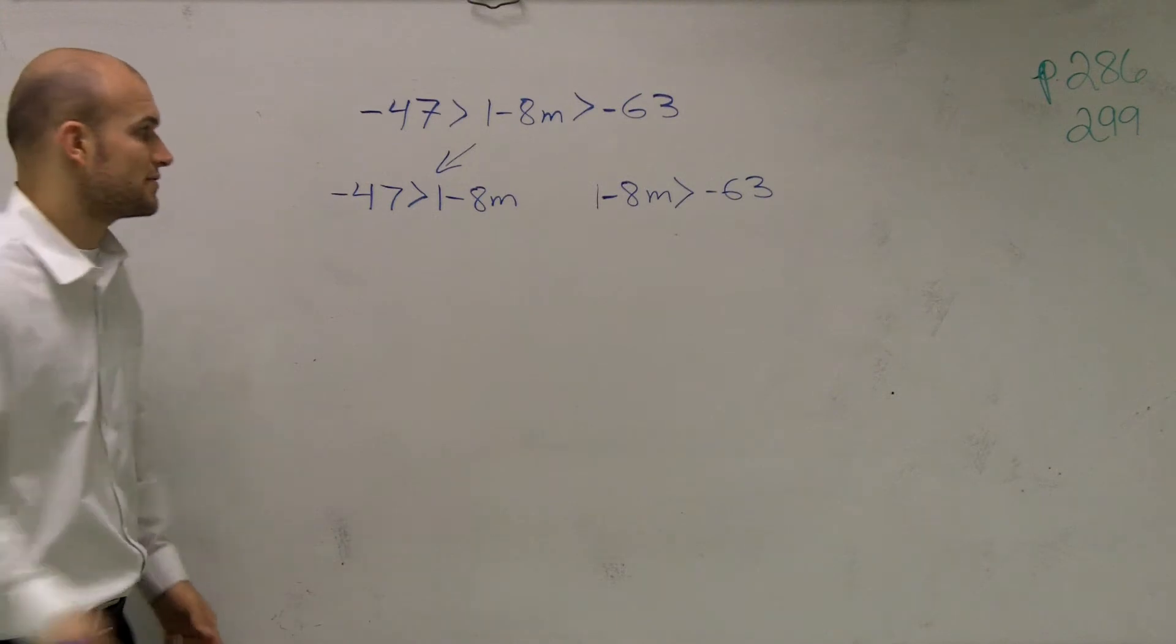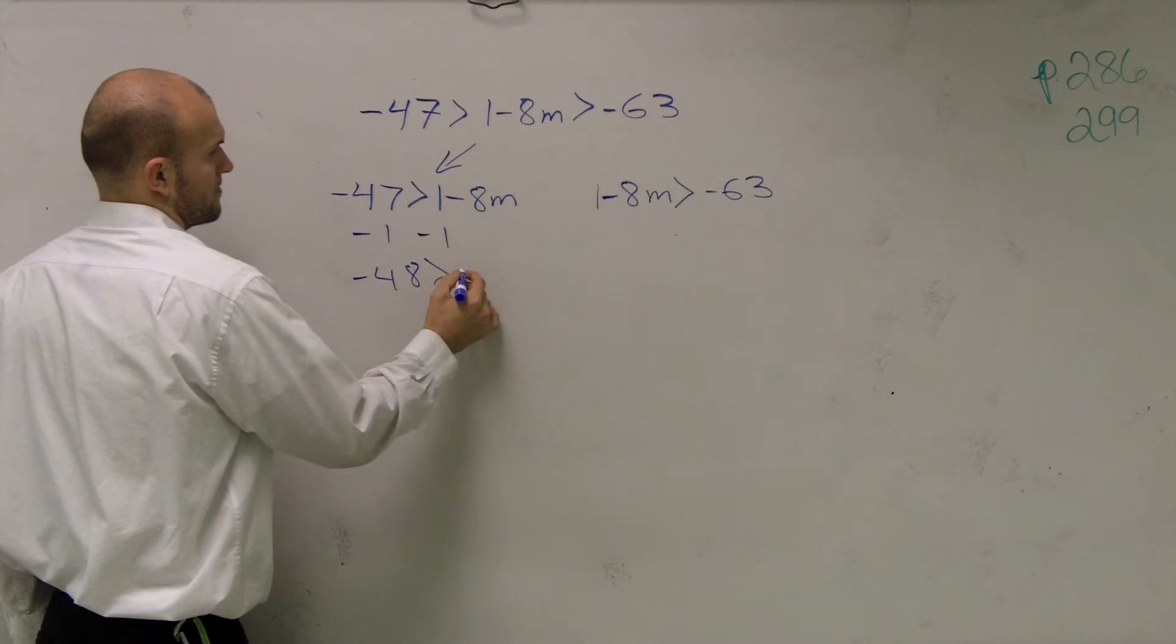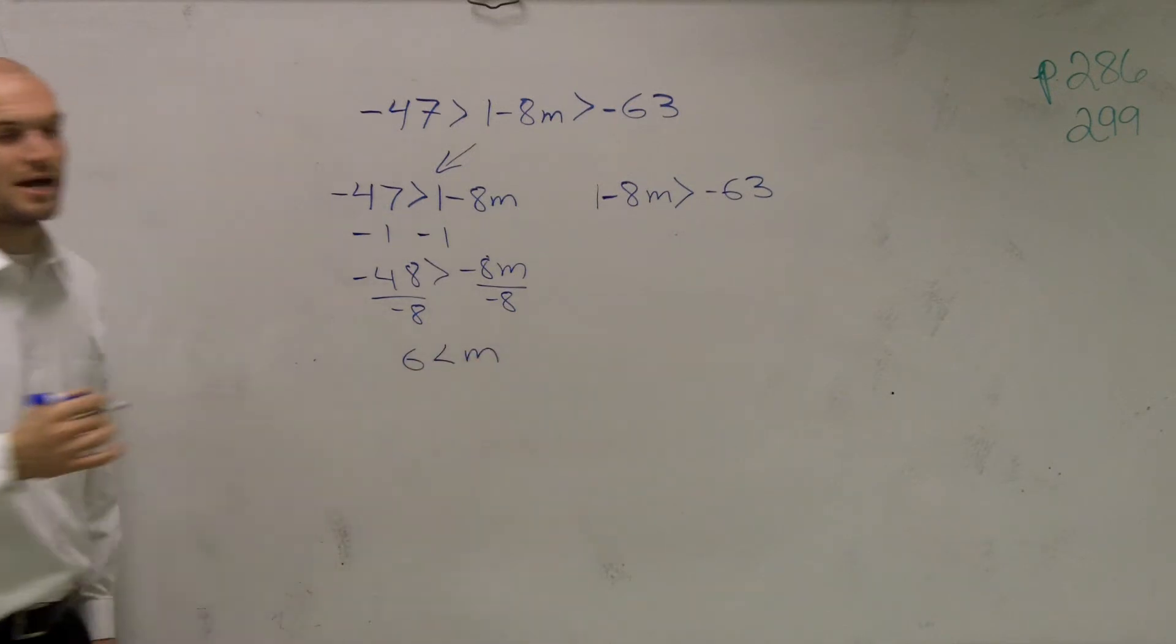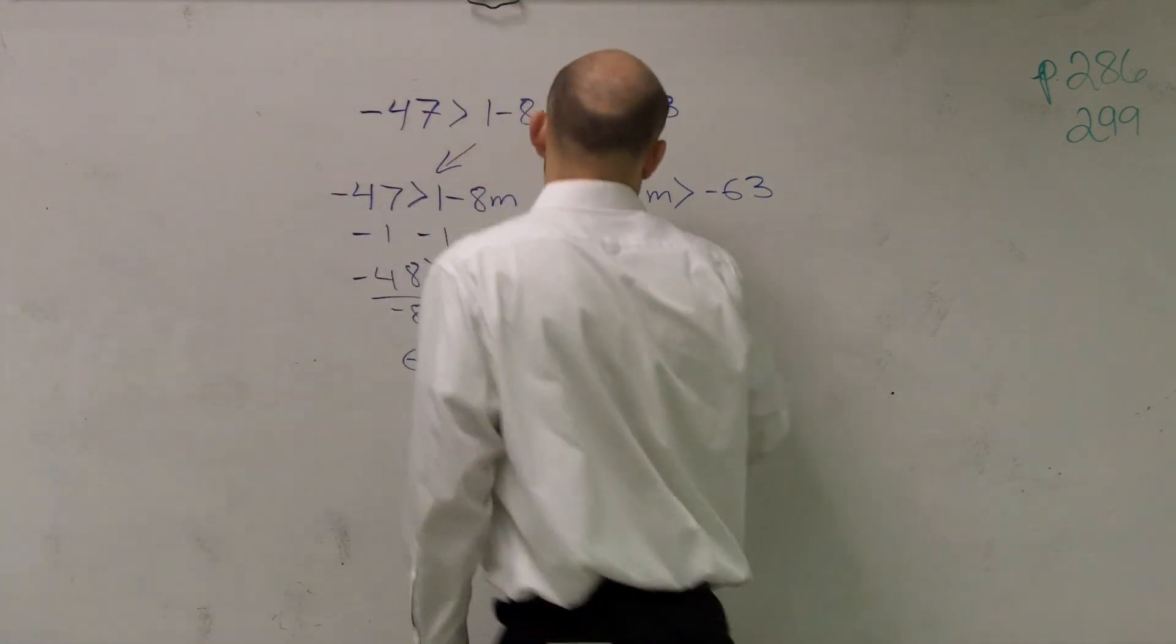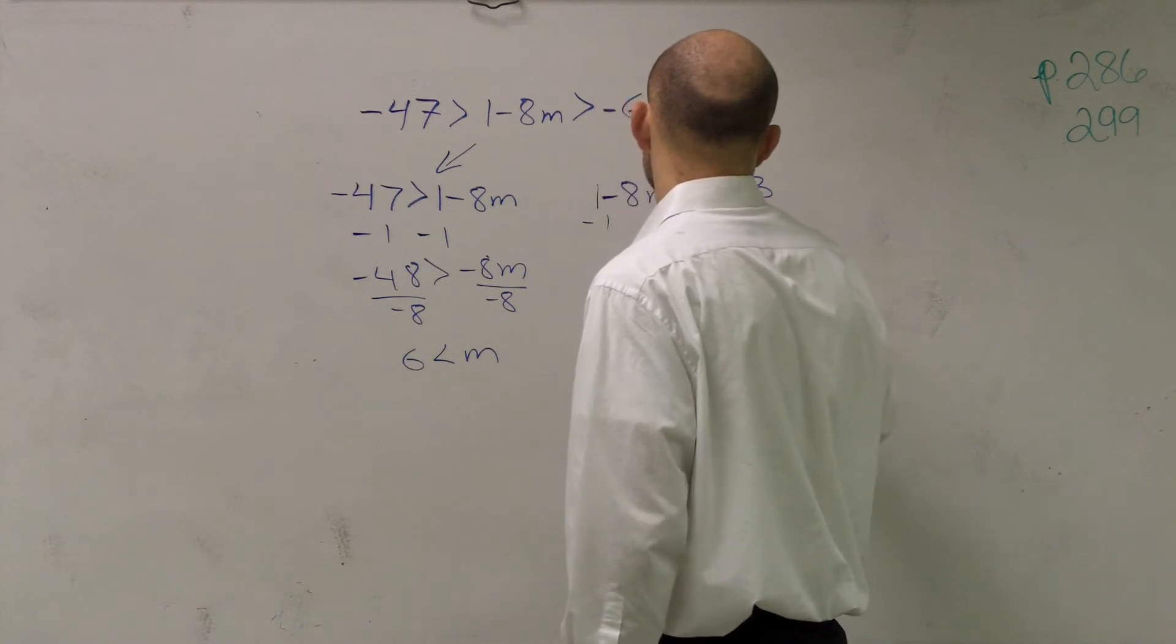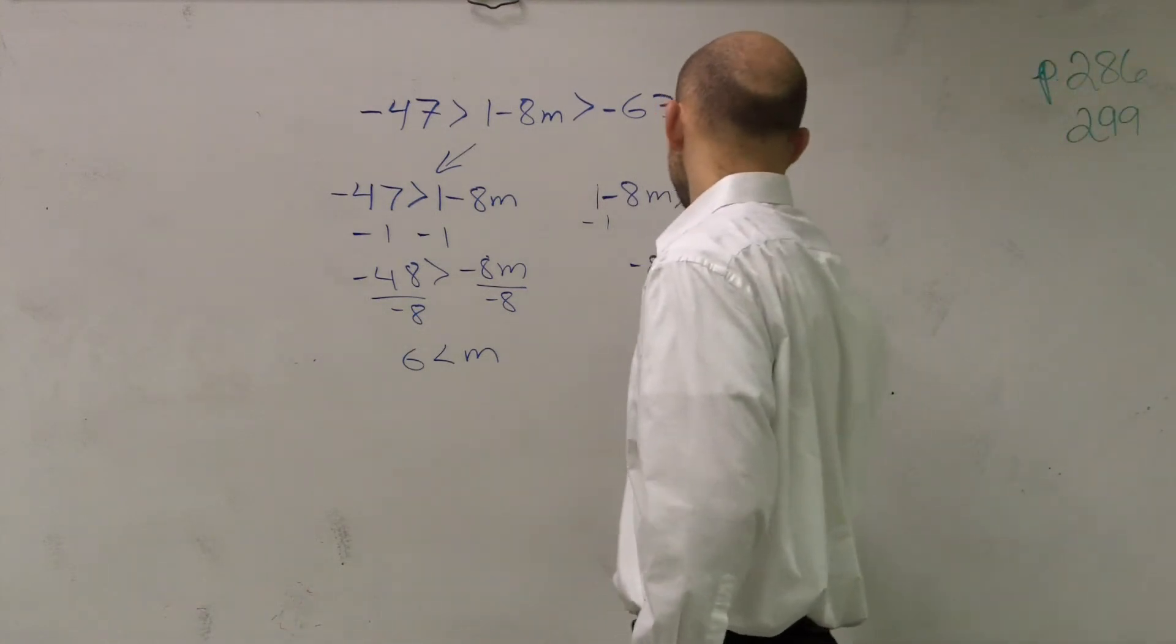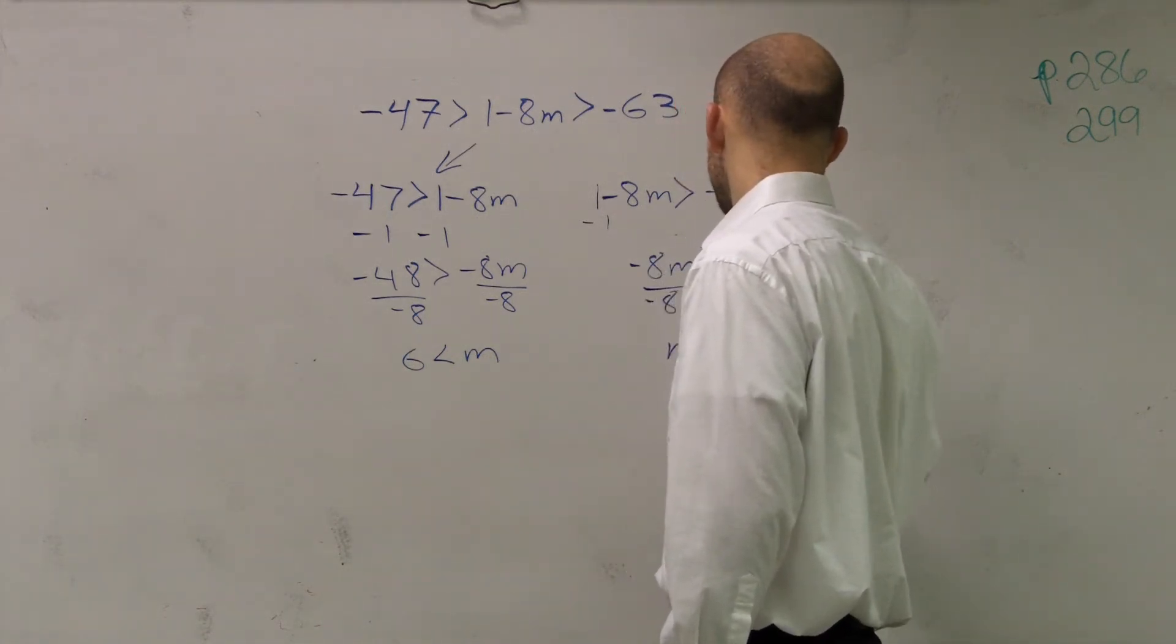So I obtained 6 is less than m when I do my work. And then over here, negative 8m is greater than negative 64. Divide by negative 8, m is now going to be less than positive 8.